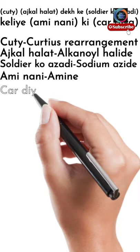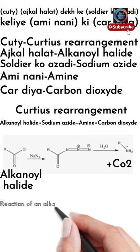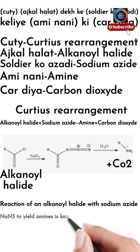Arranging all these sequentially, we get the Schmidt rearrangement: alkanoyl halide reacts with sodium azide (NaN₃) to give amines and carbon dioxide. This is the Schmidt rearrangement. I hope it was clear to you.